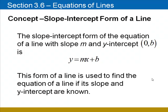We'll begin with the slope-intercept form of a line. The slope-intercept form of the equation of a line with slope m and y-intercept (0, b) is y equals mx plus b. This form of a line is used to find the equation of a line if its slope and y-intercept are known. Here's an example.